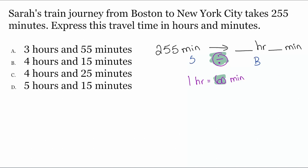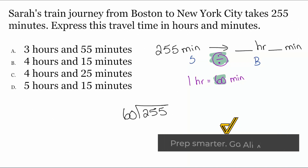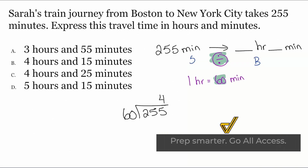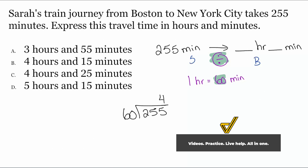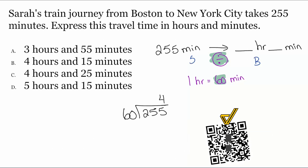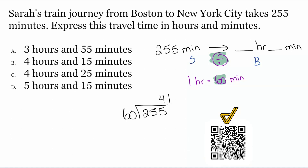Now let's get to work here. I'm going to divide 60 into 255 — that's 255 divided by 60. So now, how many times does 60 go into 255? That'll be four times. So what does the four represent? We have made four groups of 60. The four represents hours — four whole hours.